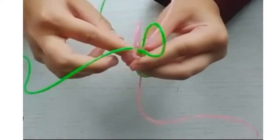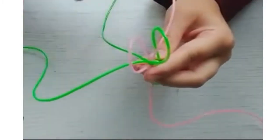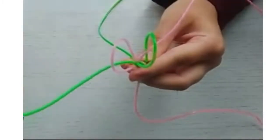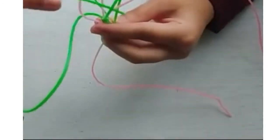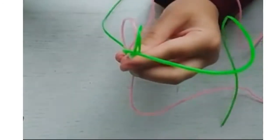You should have two loops in the middle and two strings on opposite sides. Now use the same coloured string and put it in. Do the same for the opposite side.